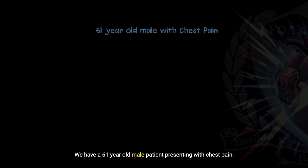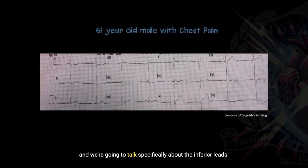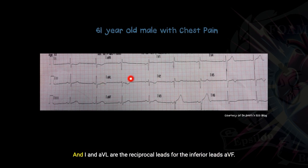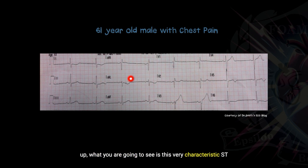I want to start with an example. We have a 61-year-old male patient presenting with chest pain, and we're going to talk specifically about the inferior leads. If you look here on the inferior leads, there's not really a whole lot that you're seeing, but what I want to draw your attention to is actually lead AVL. Lead 1 and AVL are the reciprocal leads for the inferior leads 2, 3, and AVF. Often before any ST segment elevation is going to show up, what you are going to see is this very characteristic ST segment depression and T wave inversion in the reciprocal leads.